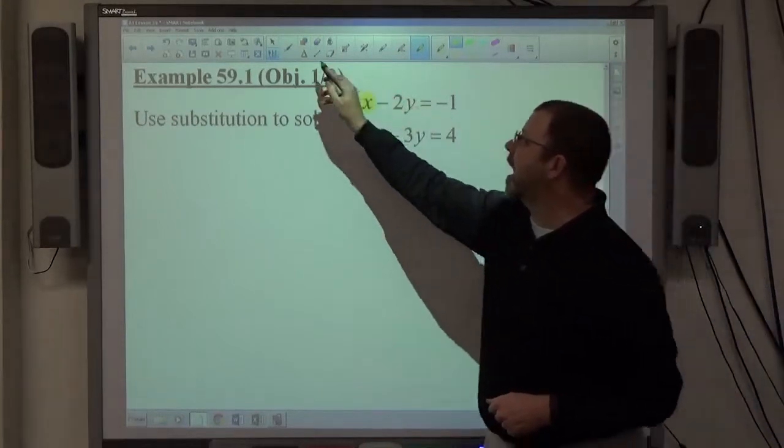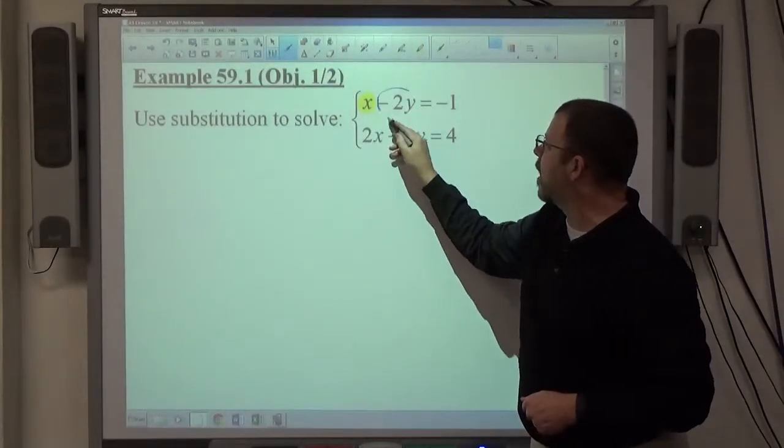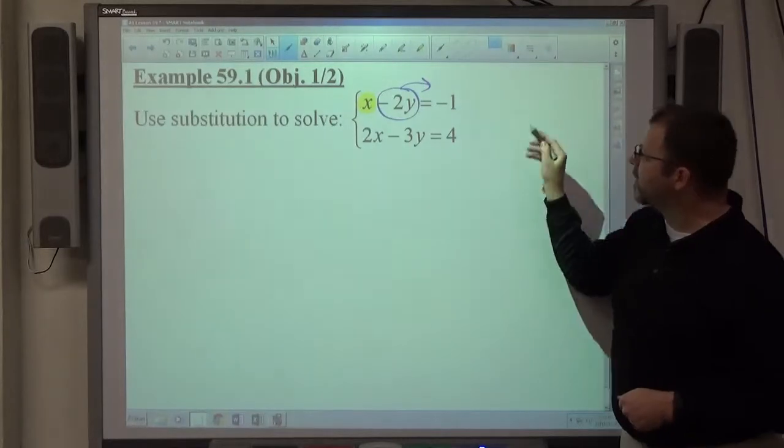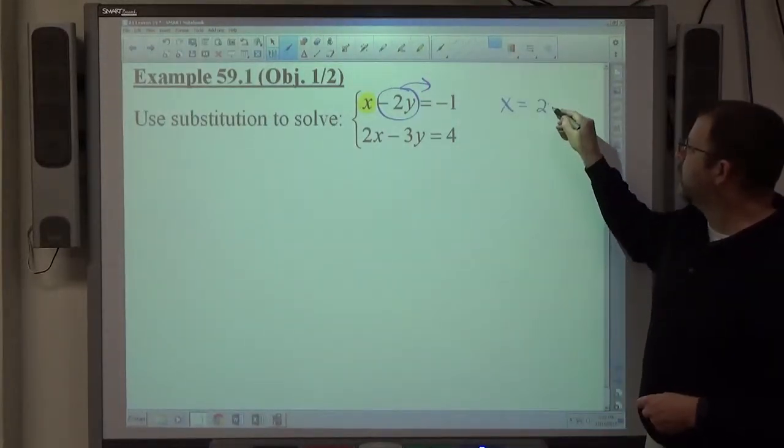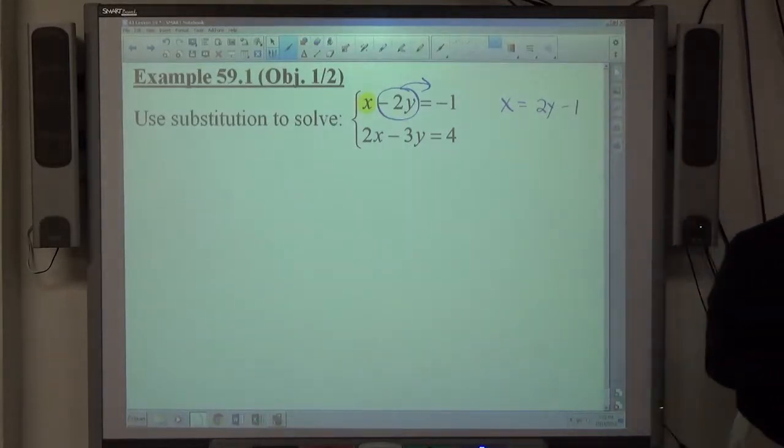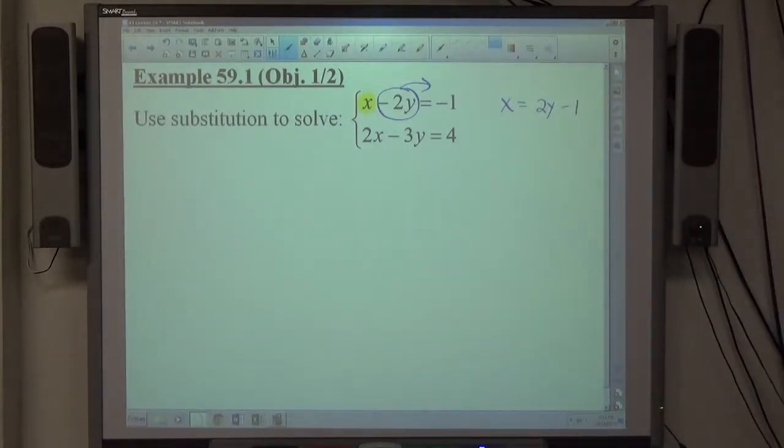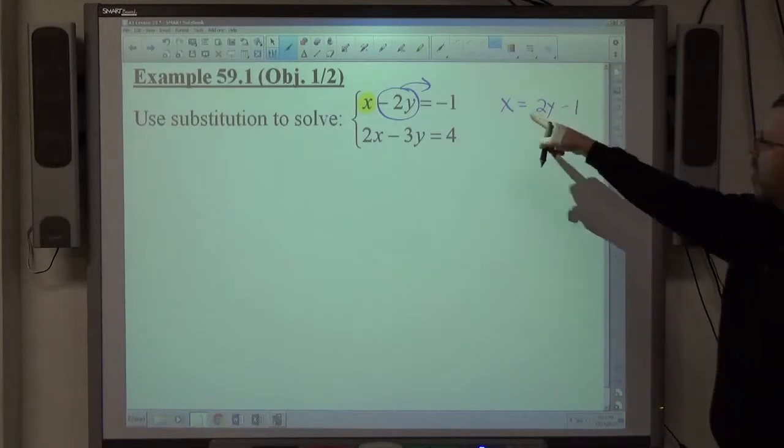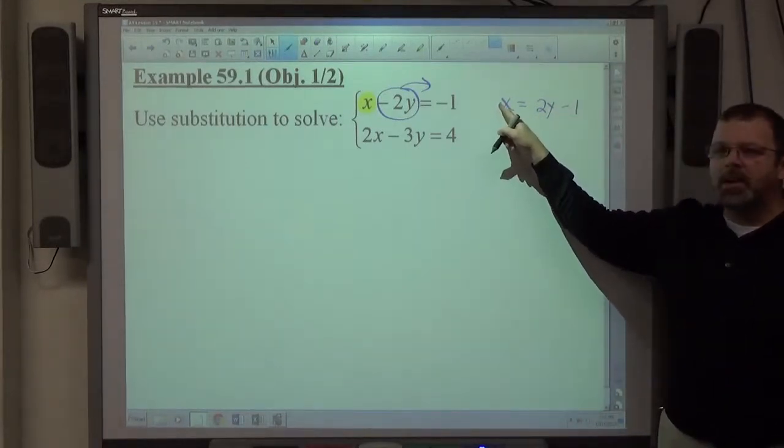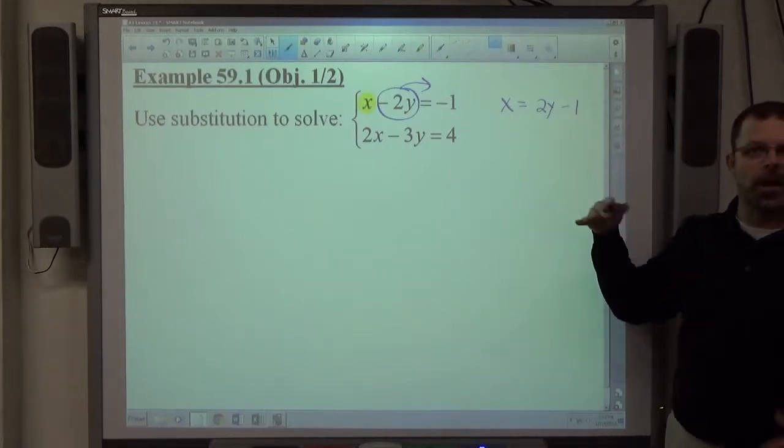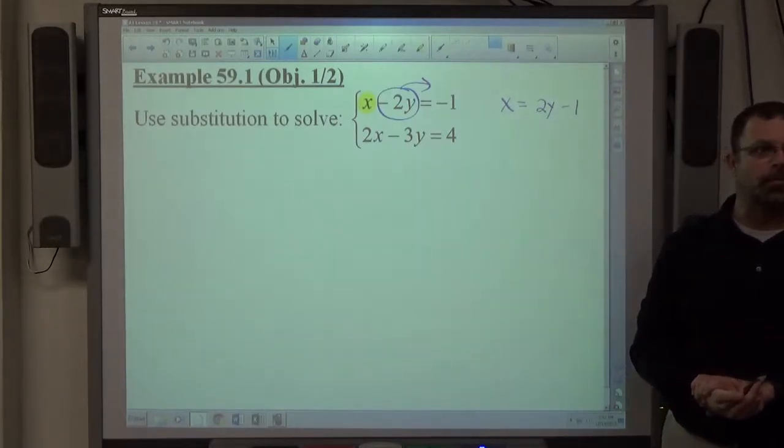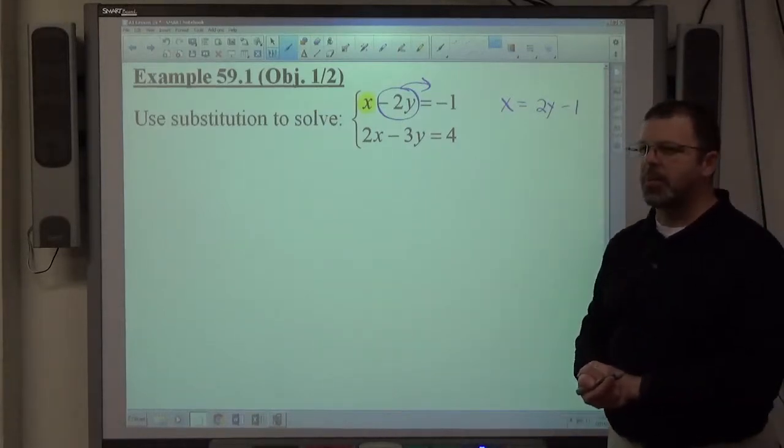All I have to do to make this say x equals is take the negative 2y and throw it to the other side. If I do that one step, x is staying on the left, equals is staying right where it's at, 2y becomes positive, negative 1 is staying where it's at. Just like that, I have x equals everything else. That's all step 1 is if you have a coefficient 1. You simply have to rearrange things so that the single variable object, all by itself. The reason a number in front of x will be bad is because if there's a number in front of x, I've got to divide. All of a sudden, I've got all this stuff over a number. Now I've got this ugly fraction I've got to substitute in. That's a little bit more difficult. So step 1, done.